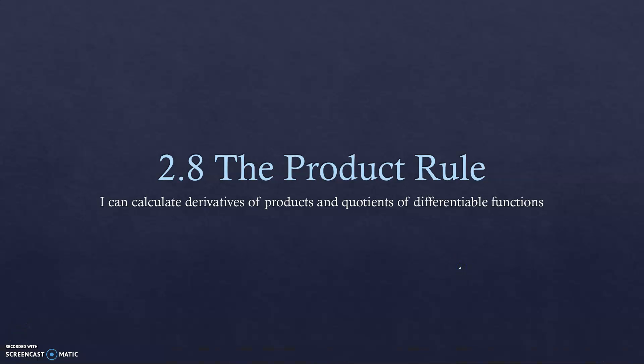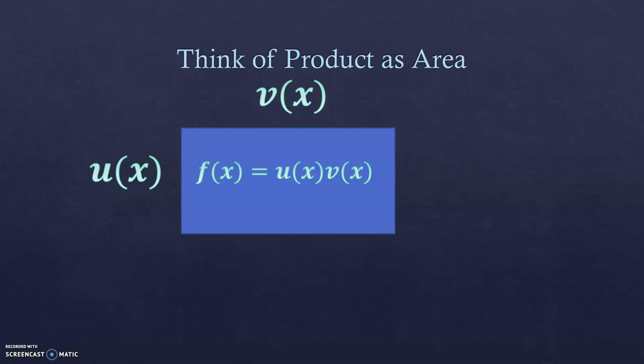2.8 is the product rule and the goal is to be able to calculate derivatives of functions that are the product of two functions. We're going to figure out what this formula is, where it comes from, and try to understand it. This includes a visual explanation, a formal proof, and a written summary.